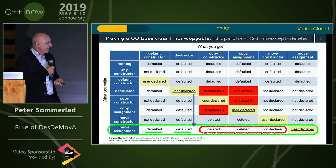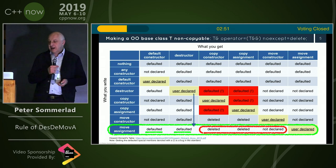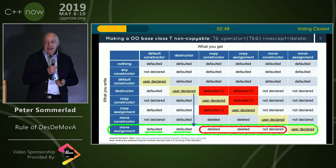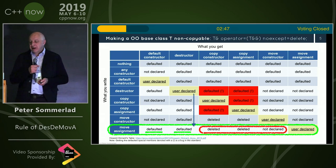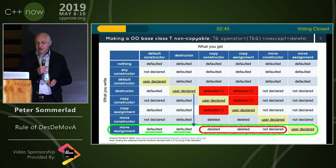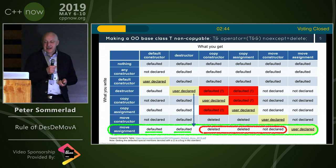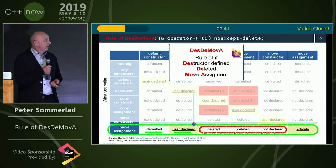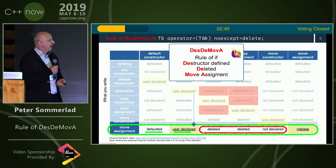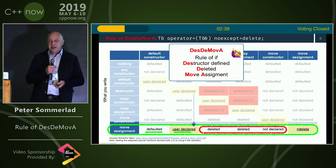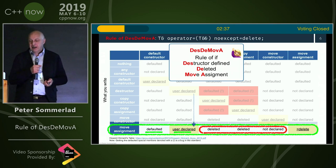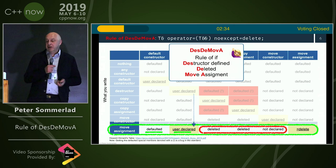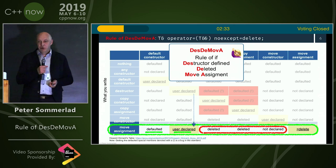But if you user-declare the move assignment, you don't get copying, but you still get a defaulted default constructor — and that is what I call the Rule of Desta Mova: destructor, deleted move assignment. Usually the most correct thing is to just have a destructor and neither copy nor move.